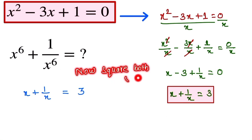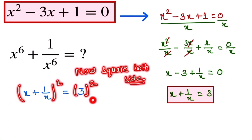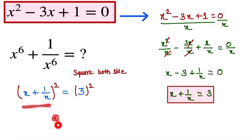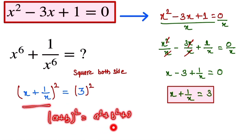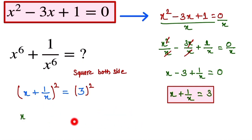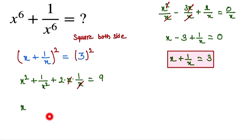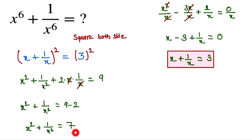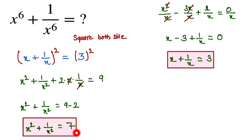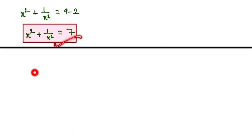Now we square both sides of x plus 1 over x equals 3. Using the identity (a + b)² = a² + b² + 2ab, we get x squared plus 1 over x squared plus 2 times x times 1 over x equals 9. Since the x terms cancel, we find x squared plus 1 over x squared equals 9 minus 2, which equals 7.